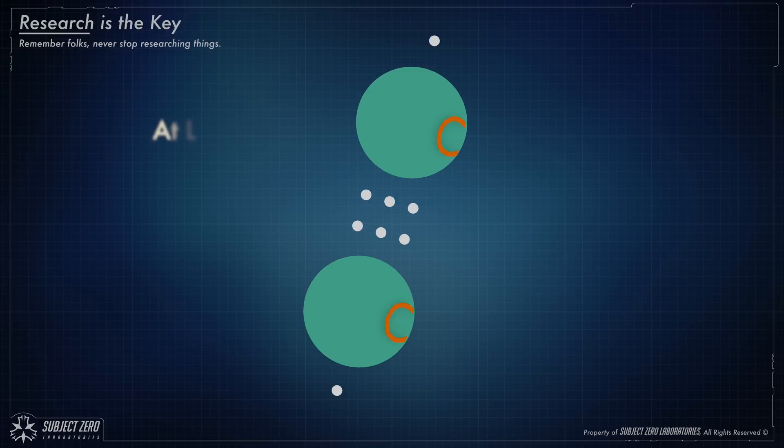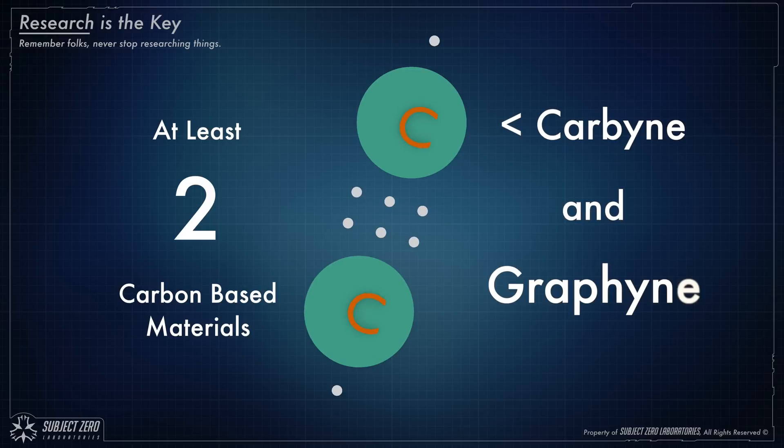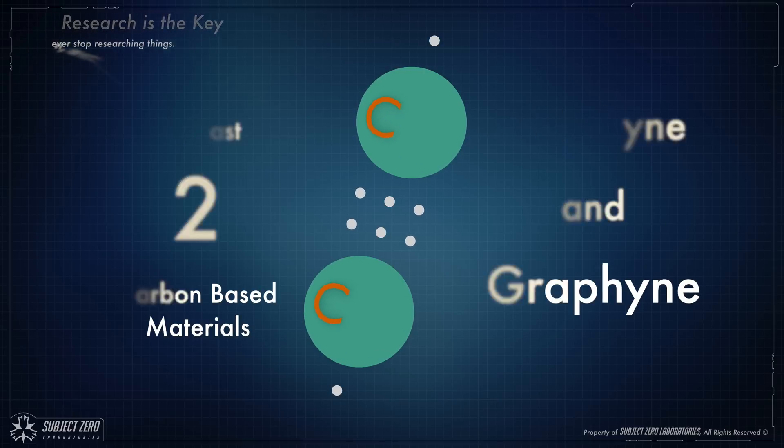And as I did my research, I found out that there is at least two carbon-based materials that are stronger than graphene. I'm talking about carbine and graphyne, but today I will only talk about carbine because graphyne is only a theory, at least for now.